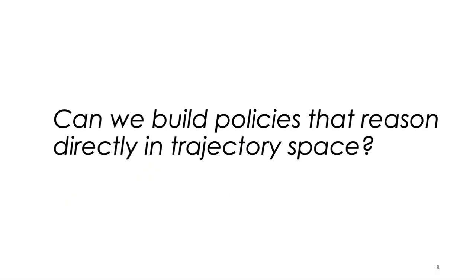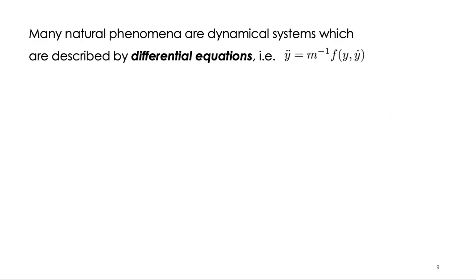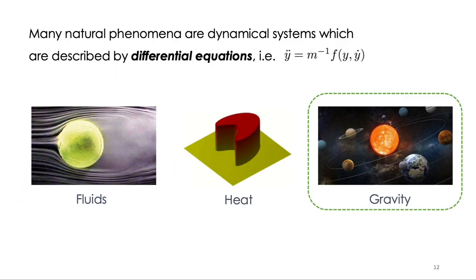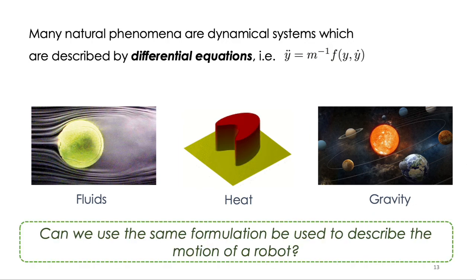So can we build policies that directly reason in trajectory space? Many naturally occurring phenomena are dynamical systems that can be described by a set of nonlinear differential equations — for example, the motion of fluids, the flow of heat, or how planets move around the sun. Can we use the formulation of a dynamical system to describe the motion of a robot?